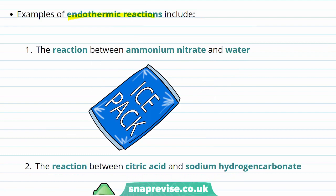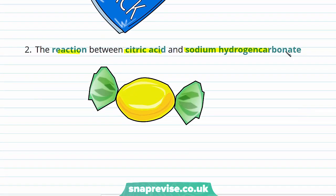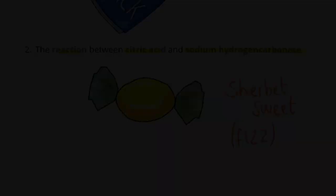Endothermic reactions aren't as common as exothermic reactions, but there are some examples. One is the reaction between ammonium nitrate and water. The fact this is an endothermic reaction that leads to cooling of the surroundings is used in making some ice packs. Snapping the ice pack causes the reaction to start, which reduces the temperature of the ice pack without needing to put it into the freezer. Another example of an endothermic reaction is the reaction between citric acid and sodium hydrogen carbonate. This is the reaction that takes place in a sherbet sweet, which makes it fizz. This endothermic reaction also takes in heat from your tongue in order for it to happen, which is why sucking a sherbet sweet can sometimes leave your mouth feeling cold, as heat has been removed from the surroundings of the reaction.